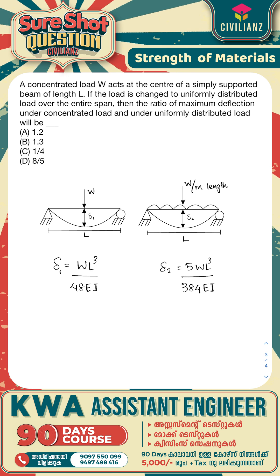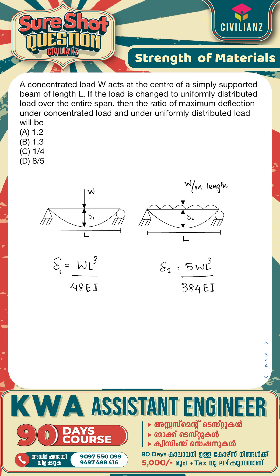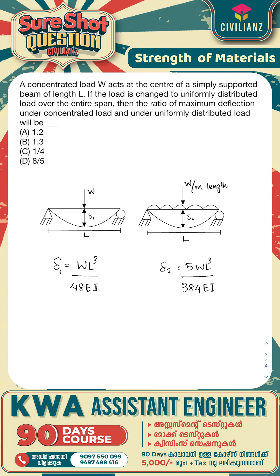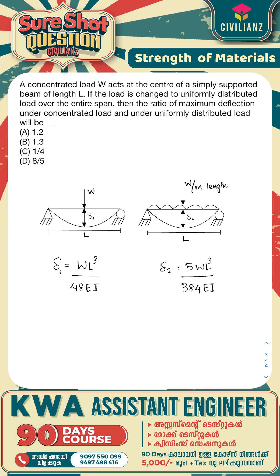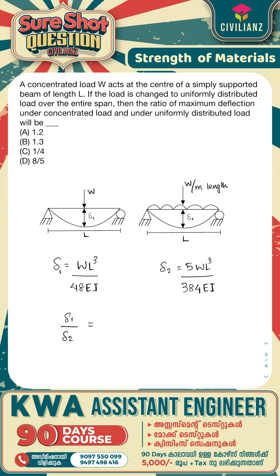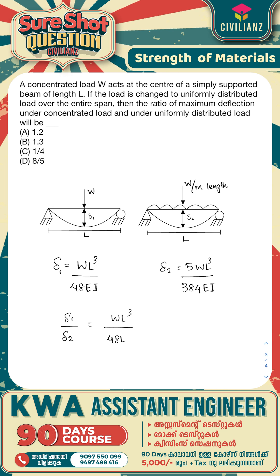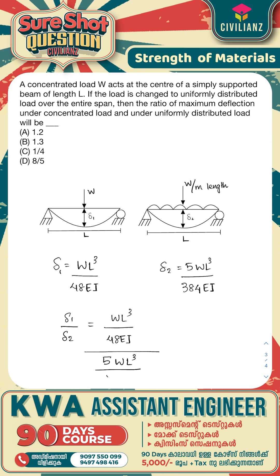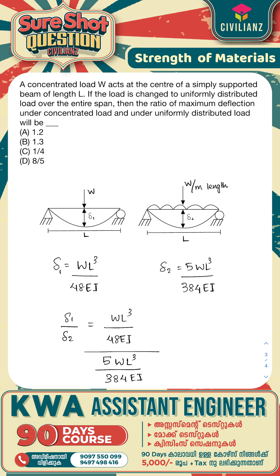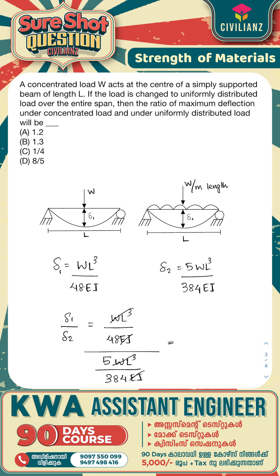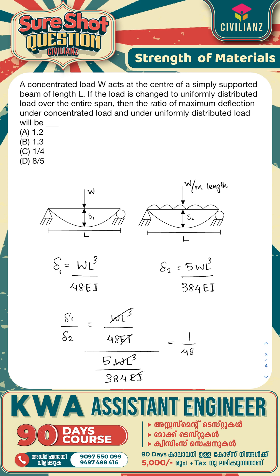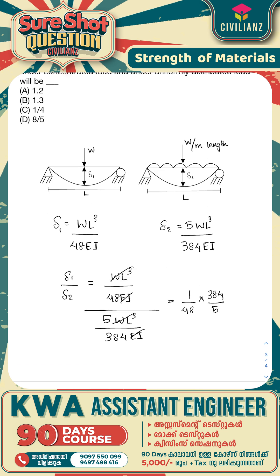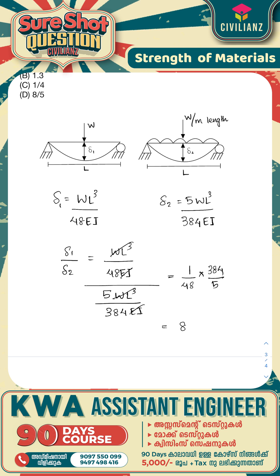The ratio of maximum deflections — delta 1 by delta 2 — gives WL³ divided by 48EI, divided by 5WL³ divided by 384EI, which simplifies to 1/48 multiplied by 384/5, giving 8/5.